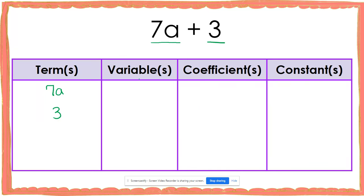A variable is a letter that represents a number in an expression. I notice that I have an a here, which means that a is going to be my variable. Anytime I have a variable, that means I also have a coefficient. The coefficient is the number being multiplied by our variable. In this problem, I notice that a is being multiplied by 7, so 7 would be considered my coefficient.